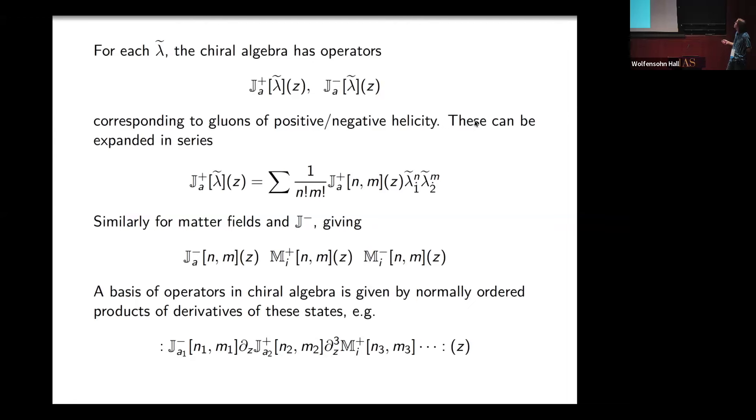For example, I'm going to have an operator j plus lambda tilde of z, where lambda tilde is a parameter, z is where I am on this chiral algebra plane. Similarly for the negative helicity states. I can expand these in series in lambda tilde, getting currents j_n. These currents will be the generators for my chiral algebra. I have similar currents for matter fields and for negative helicity gluons, so that the general local operator of my chiral algebra is given by some normally ordered product of these currents.